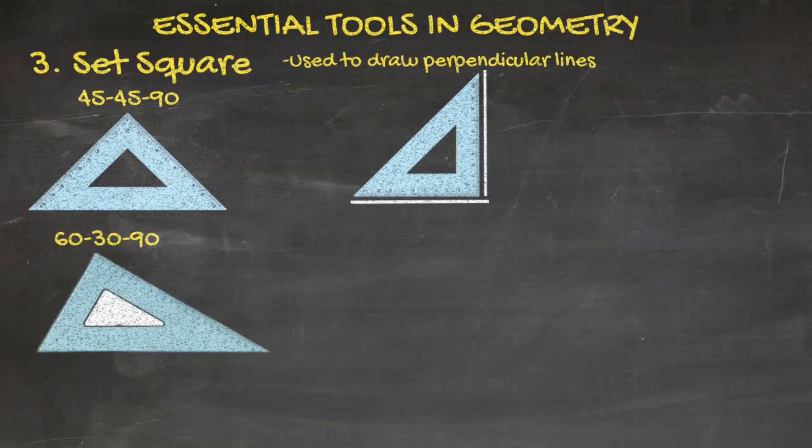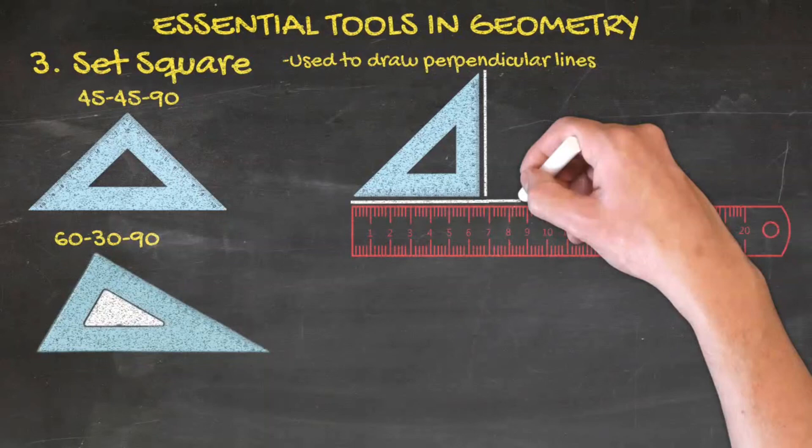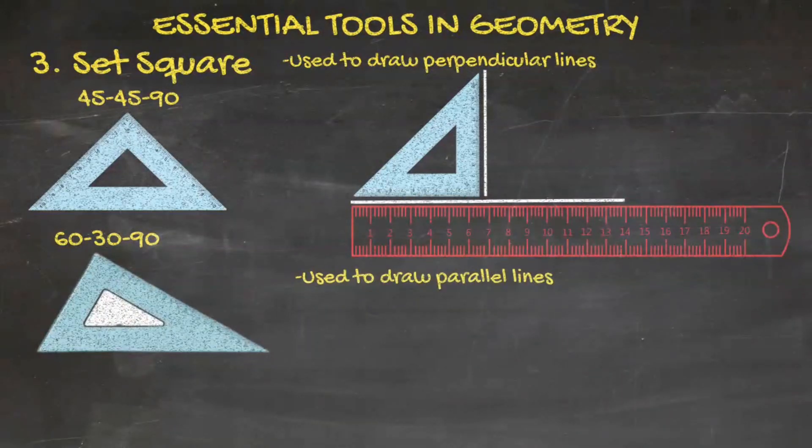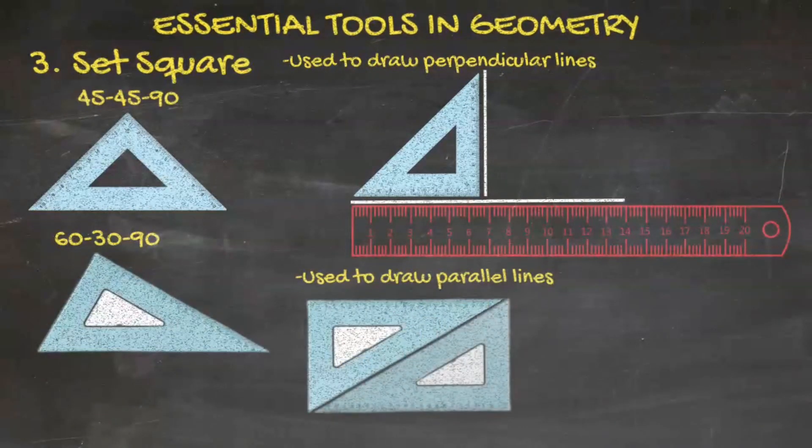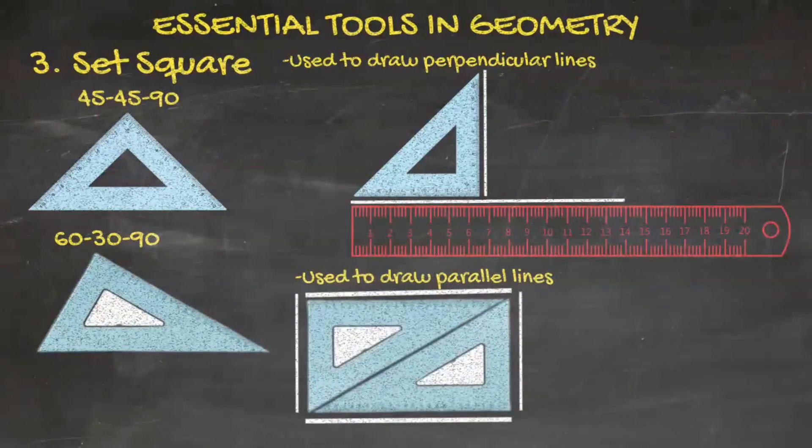However, if we wanted to draw perpendicular lines making more than one right angle, we can use a ruler like this and extend the bottom line. Set squares can also be used to draw parallel lines. All we have to do is align two of the same set square like this to make a rectangle, and then trace out the perimeter to make two sets of parallel lines.